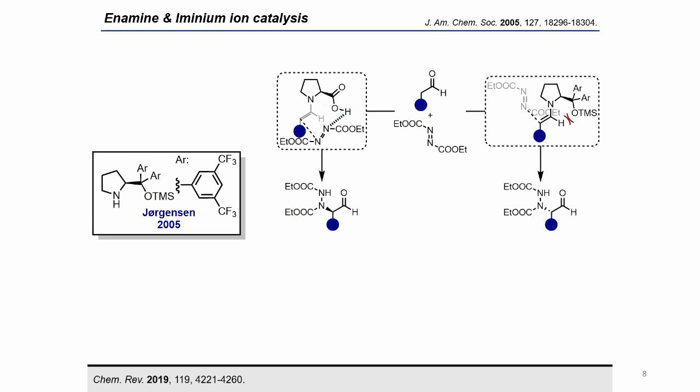An illustrative example of the application of enamine organocatalysts was reported by Jørgensen in 2005. They reported the alpha-functionalization of aldehydes with azodicarboxylates. When using proline as the catalyst, the stereoselectivity of the addition is directed through hydrogen bonding with the electrophile. In contrast, using diarylsilylprolinols, it is controlled by steric effects, leading to the opposite enantiomer. Jørgensen–Hayashi organocatalysts have also been broadly used in enantioselective additions to alpha-beta unsaturated aldehydes, showing in this case a similar reactivity to MacMillan's imidazolidinones.